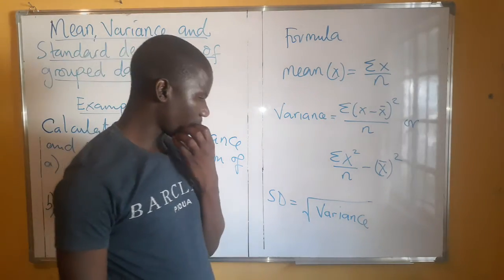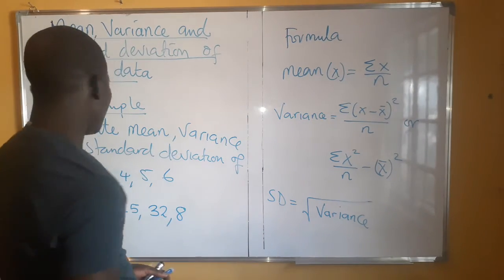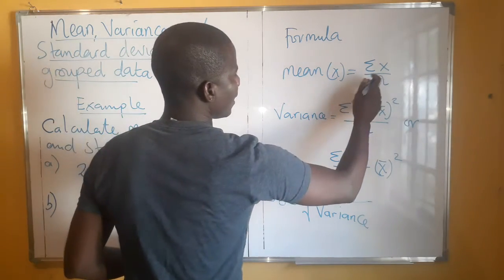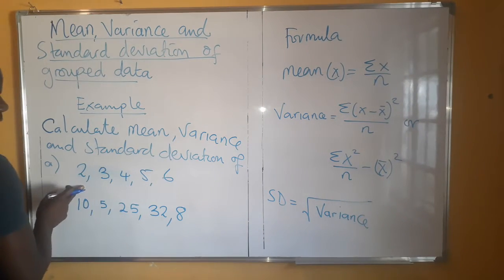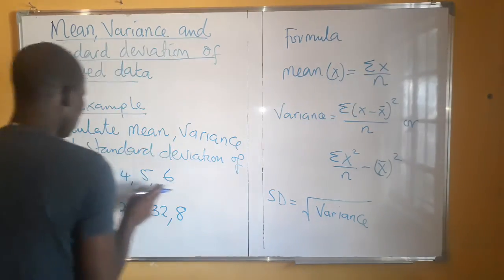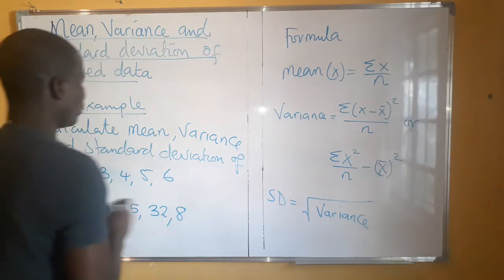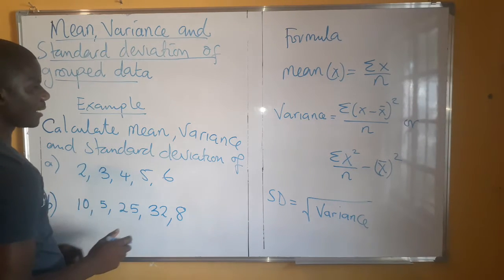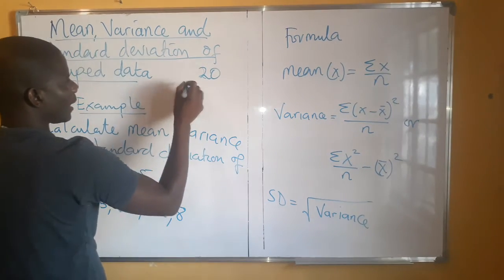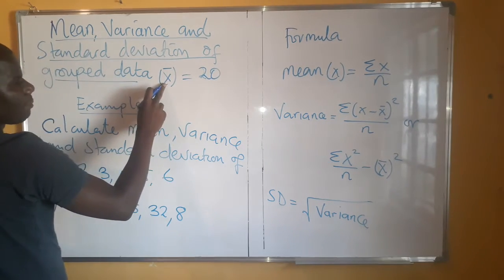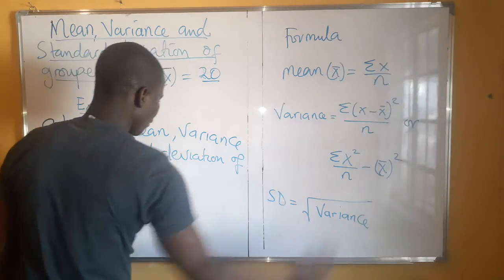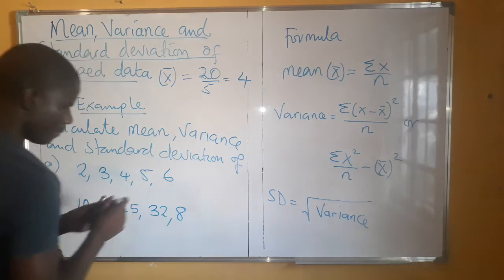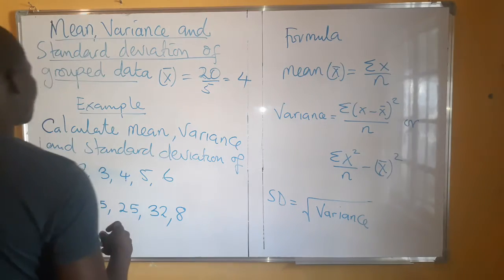So let's begin. For the first one, we need to find the mean. The formula for mean is the summation of x. These values are represented by x, so we need to add all of them. Adding them gives us 20. So x-bar, our mean, is 20 divided by 5 — that gives us 4. So 4 is our mean.